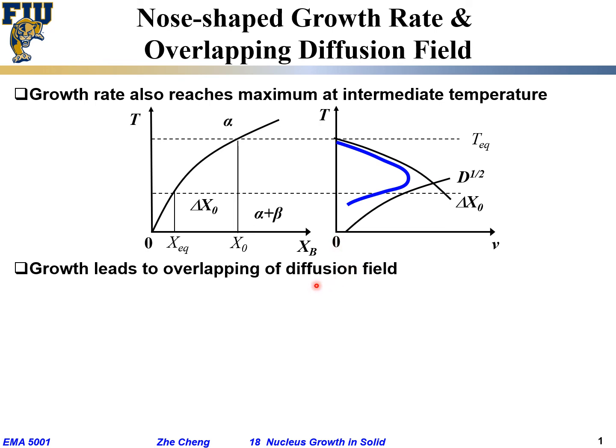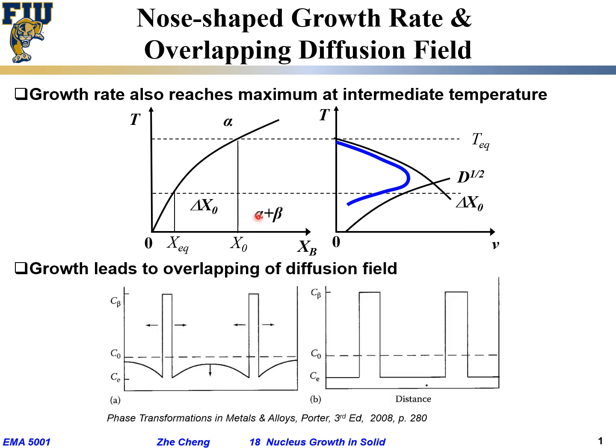The growth would lead to the overlapping of diffusion field, because the growth will lead to the change in local composition. Initially have something like this. I'm drawing the composition versus location. Here the sharp one indicates C beta. Between here I have what phase? Beta phase. And then between neighboring beta phase, I have the host of alpha phase. If we assume local equilibrium, right when alpha and the beta touches, the alpha phase should have the equilibrium composition Ce.